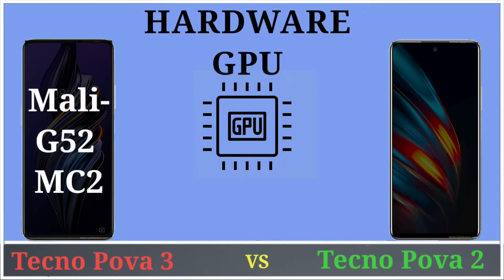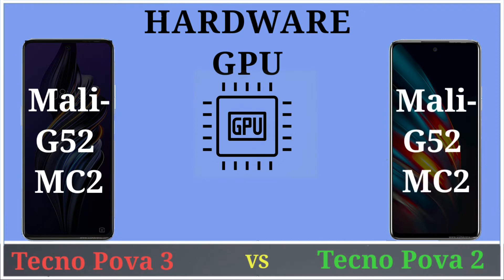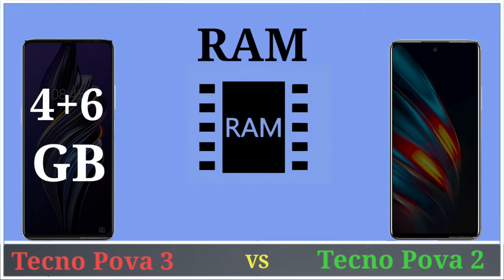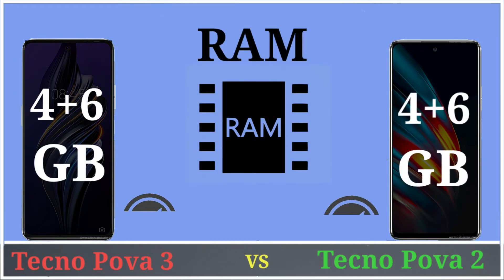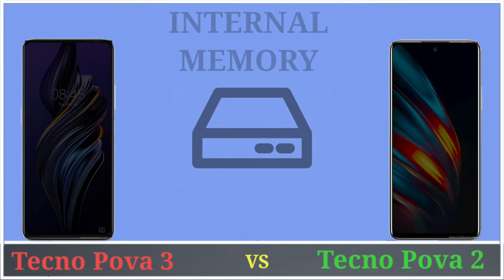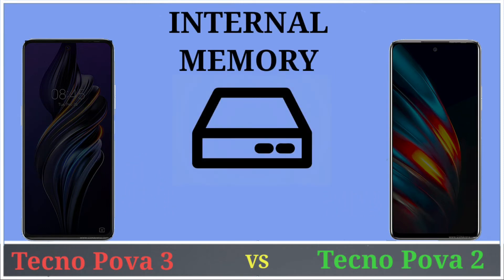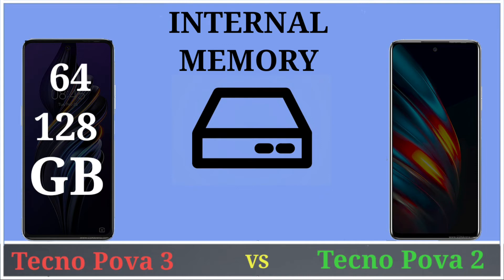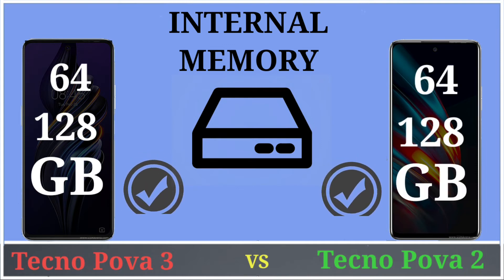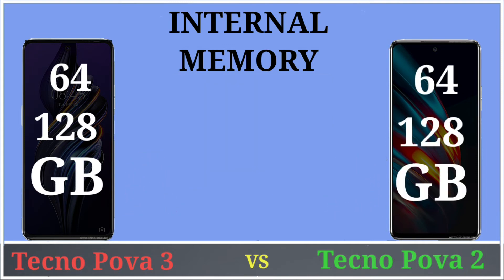GPU: Tecno Pova 3 comes with Mali-G52 MC2 and Tecno Pova 2 has the same GPU. RAM: Tecno Pova 3 has 4GB and 6GB RAM variants and Pova 2 also has 4GB and 6GB RAM variants. Internal storage: Tecno Pova 3 has 64GB and 128GB options and Pova 2 is also the same.